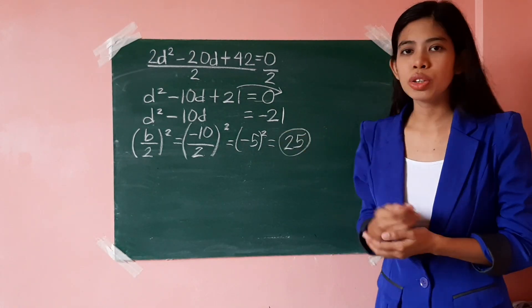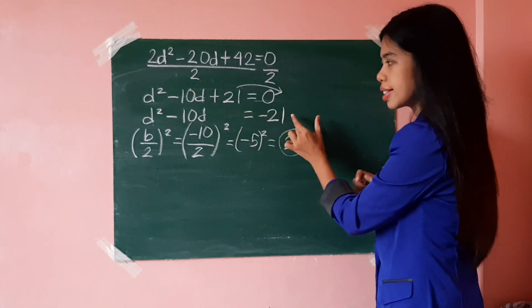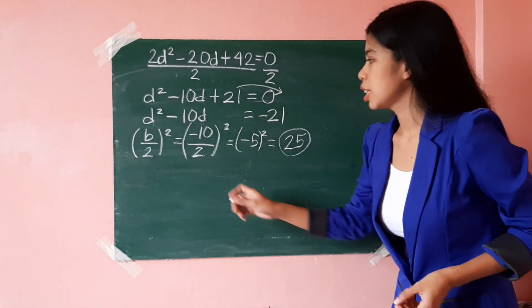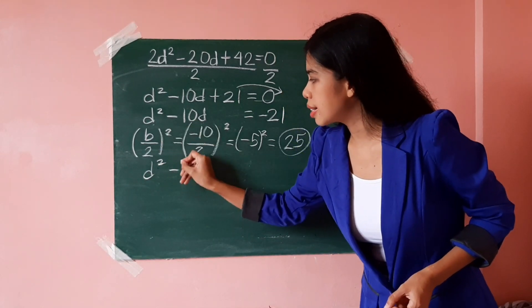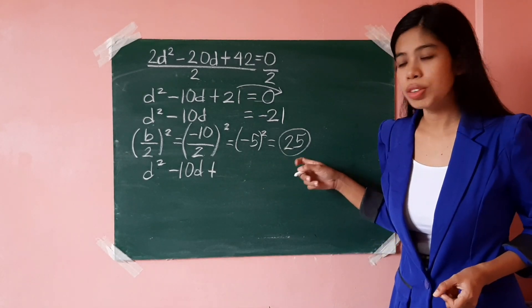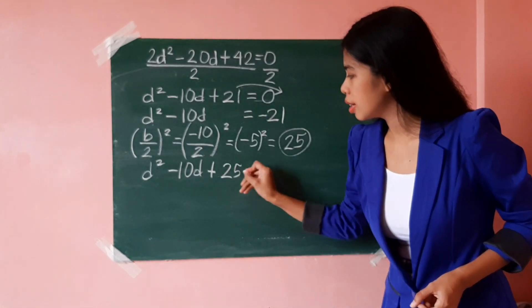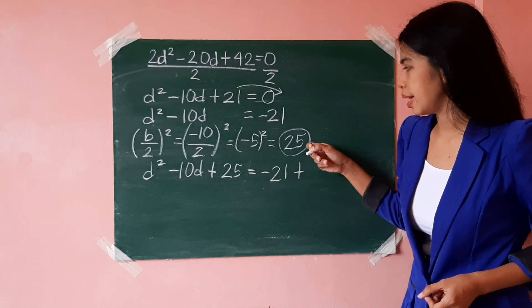So, what are we going to do with positive 25? We just have to add it on both sides of the equation. So, we now have d² minus 10d plus 25 equals negative 21 plus 25.